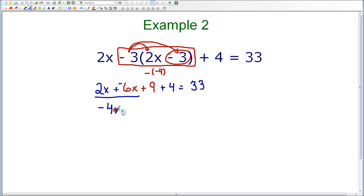So, I can combine those two terms to negative 4x. I can also combine my two constants. I have positive 9 plus 4, which is plus 13. And on the right-hand side, I still have equals 33. So, in this step, all I've done is combine my like terms. I have not started solving the equation yet.